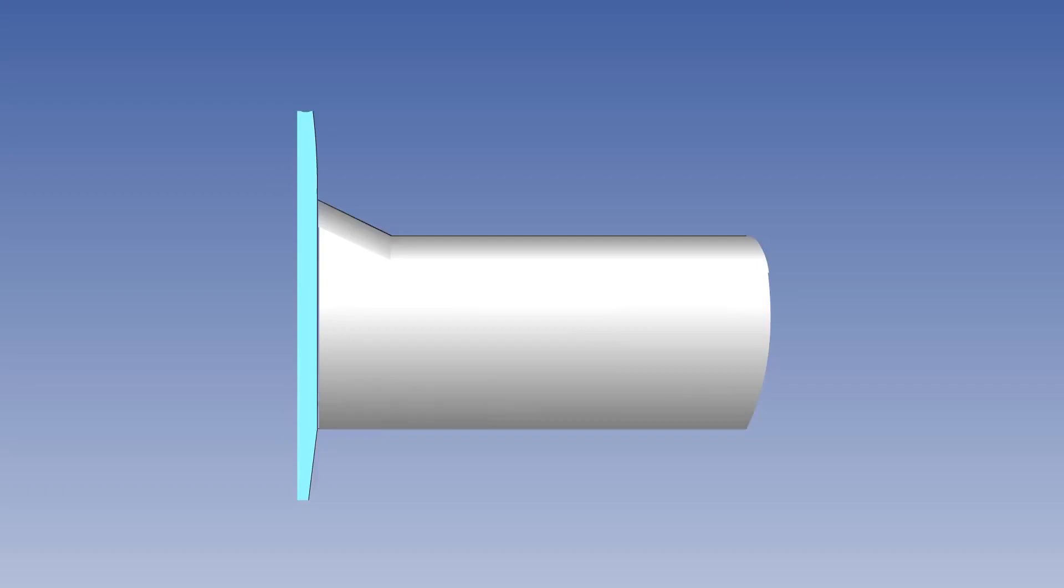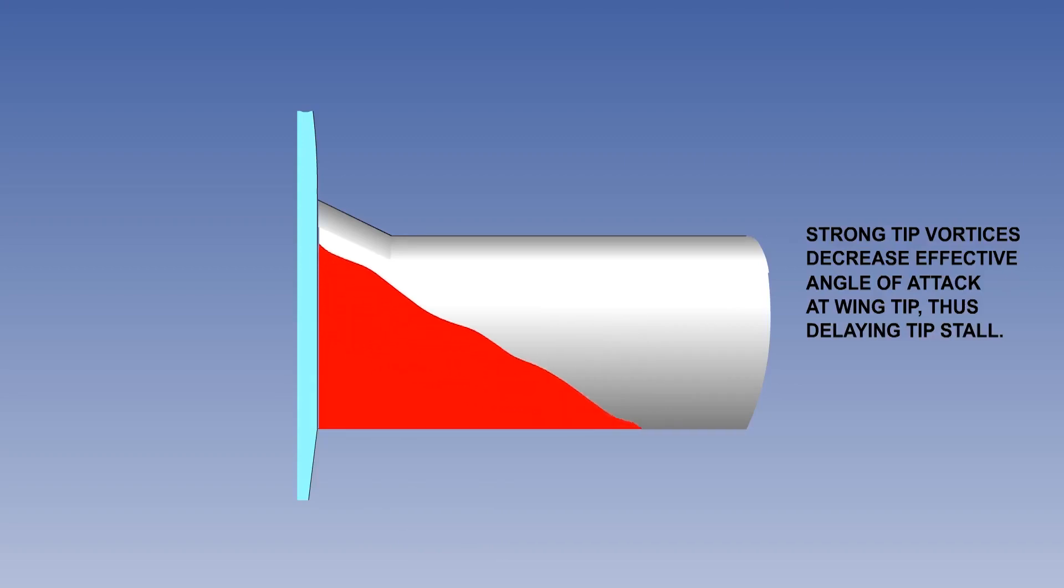On a rectangular wing, separation tends to start at the wing root trailing edge and spread forward and out towards the tip. Since the reduction in lift occurs initially inboard near the center of gravity, even if it happens on one wing slightly before the other, there is little tendency for the aircraft to roll.